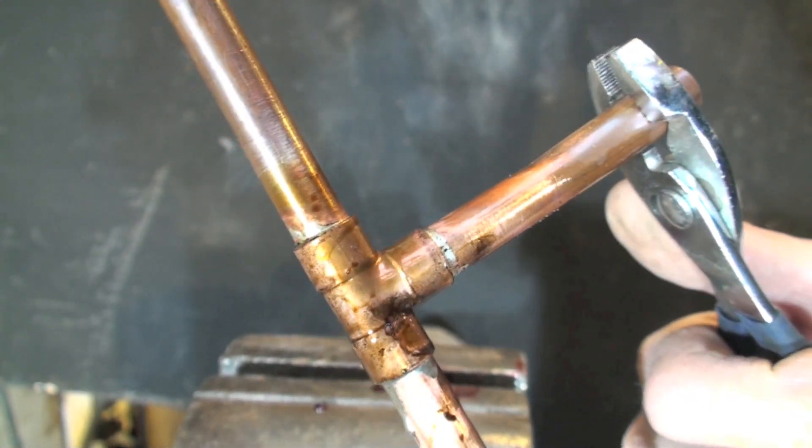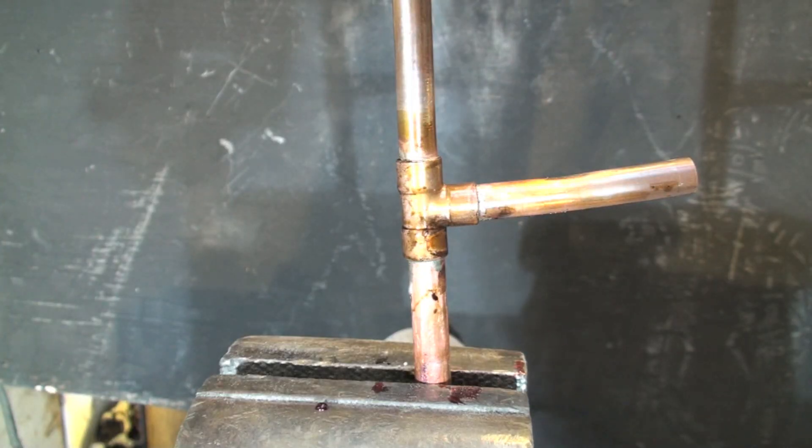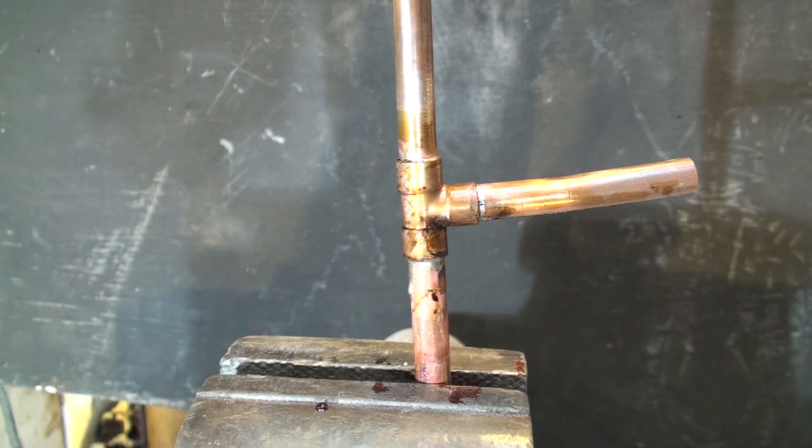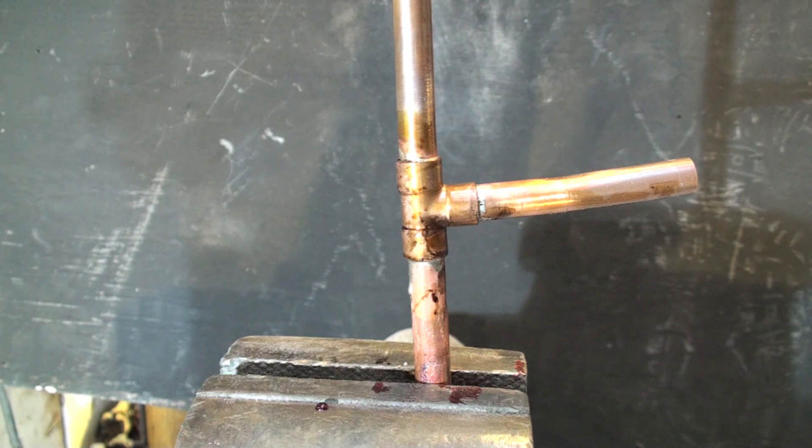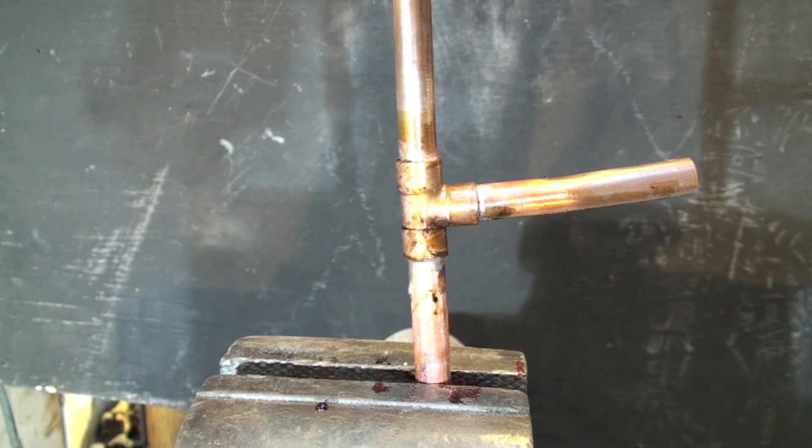That's how to do the low temp solder joint. This probably looked pretty simple - if you haven't done much of this, it's not quite that simple. I've been doing it for a very long time so most of my stuff comes out.